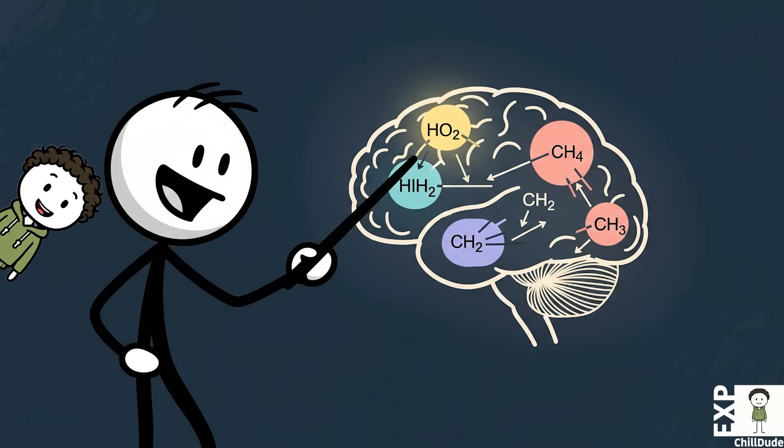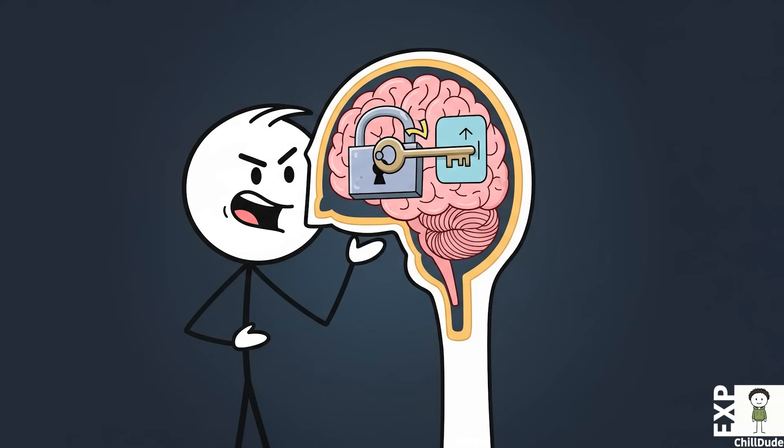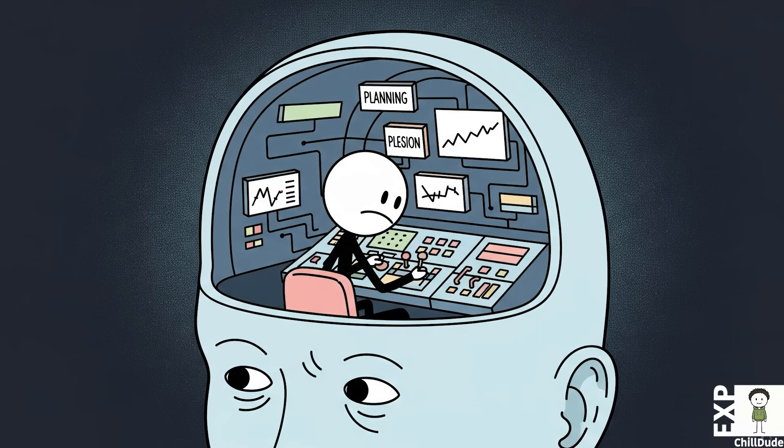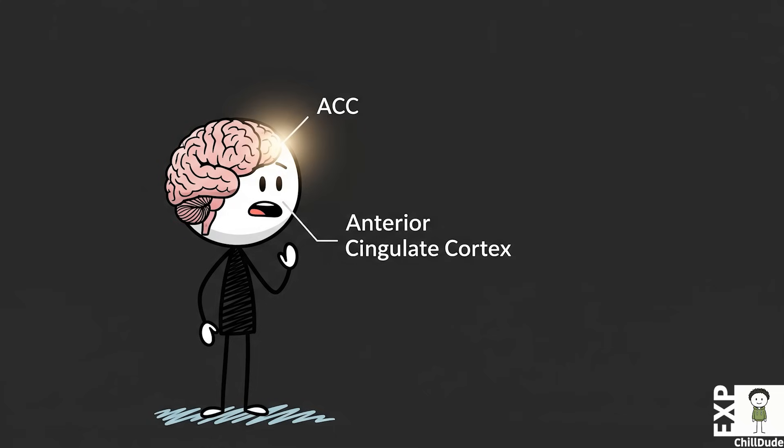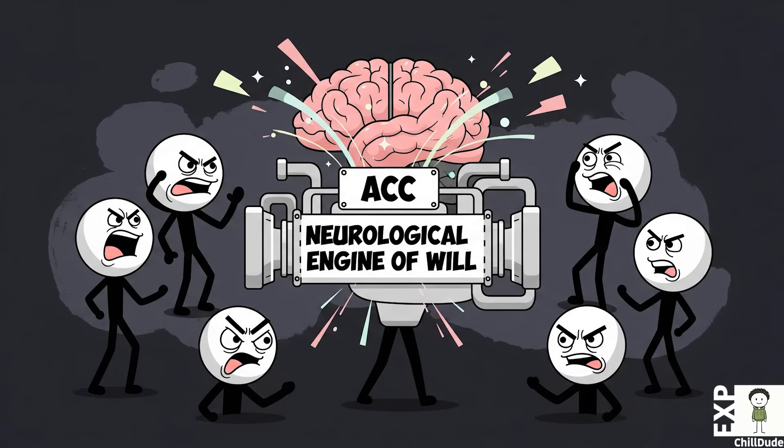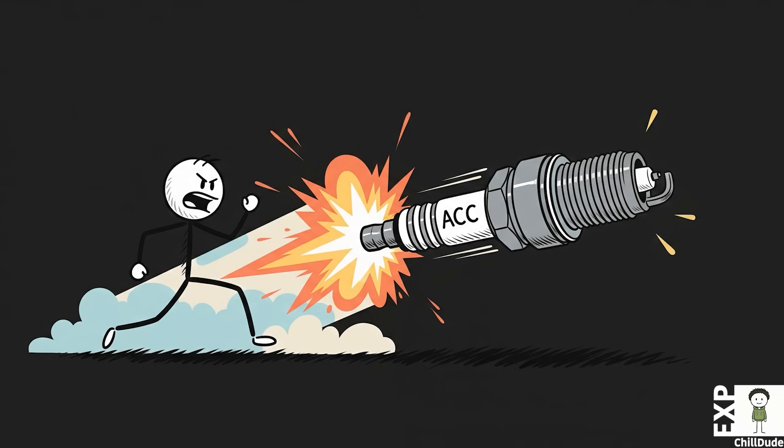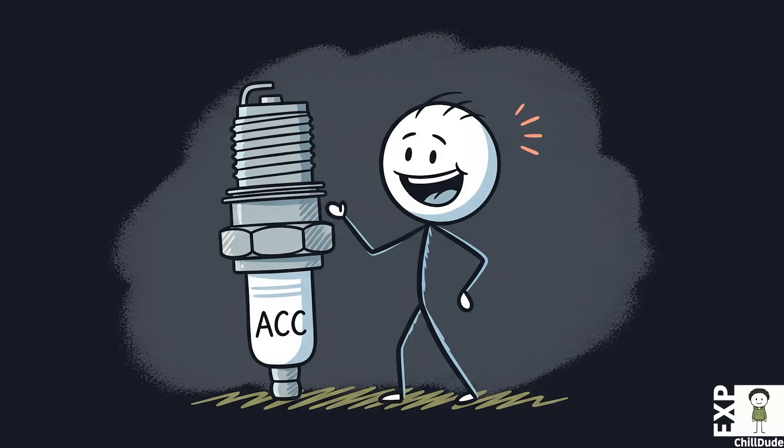What Leach observed behaviorally, modern neuroscience can now begin to explain biochemically. The key to understanding give-up-itis lies deep within the brain's frontal lobes in a region called the prefrontal cortex. This is the seat of our executive functions—planning, decision-making, and personality—and within this area lies a critical structure known as the anterior cingulate cortex or ACC. Think of the ACC as the neurological engine of our will. It is the part of the brain that fires up when we initiate a goal-directed behavior, whether it's getting out of bed in the morning or running a marathon. It provides the spark that turns intention into action.